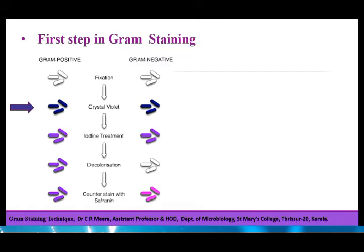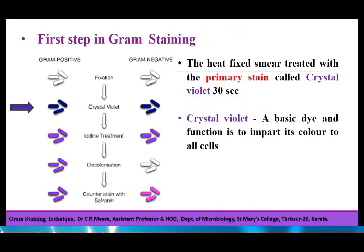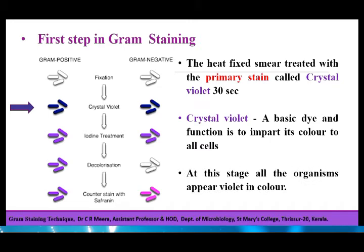In the first step of Gram staining, the heat-fixed smear of the organism is treated with the primary stain called crystal violet for 30 seconds. It is a basic dye and its function is to impart its color to all cells. At this stage, all organisms including Gram positive and Gram negative organisms appear violet in color.